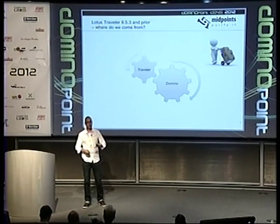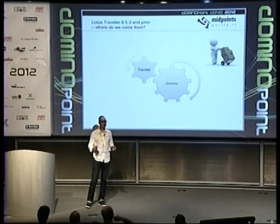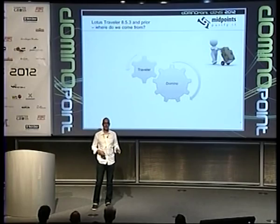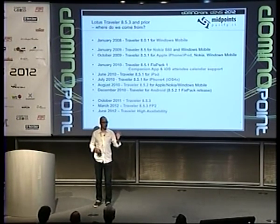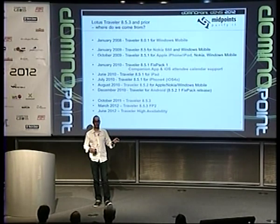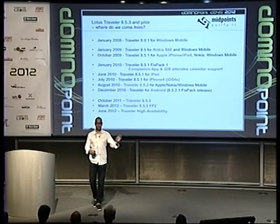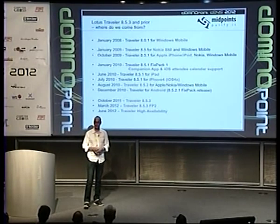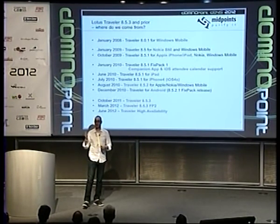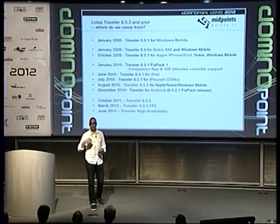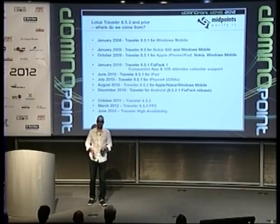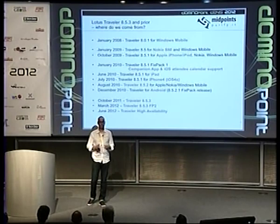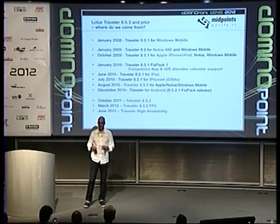Where do we come from? Domino — a really good product. Everybody is using it. It never breaks, which maybe is a problem, but it's really cool. IBM added Traveller around four and a half years ago. It's free. Some people say it's just the best product IBM ever built because it just works — installation within five minutes, up and running. They started with Windows Mobile, went to Nokia, added iOS support, added Android support, added companion, and now next week — high availability.